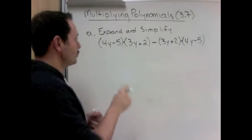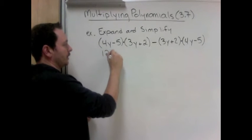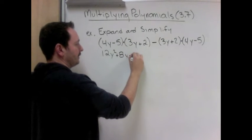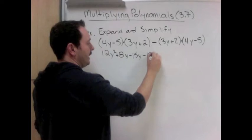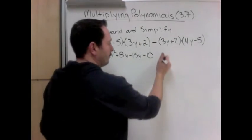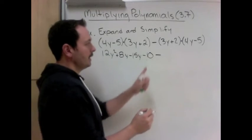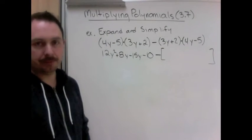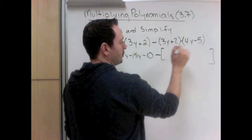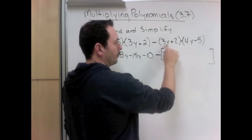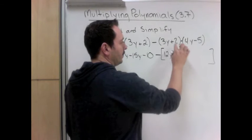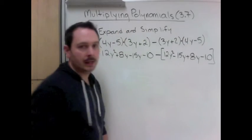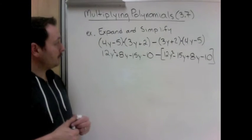And I'm going to rush through some of this because you've seen it a bunch. 4y times 3y is 12y². 4y times 2 is 8y, minus 5y, minus 5 times 3 is minus 15y, minus 5 times 2 is minus 10. And then we also have a multiply over here. So we have minus. And here's where you may make a mistake. We're going to minus all of this. So I'm going to keep a big bracket around it. Now let's FOIL this. 3y times 4y is 12y². 3y times minus 5 is minus 15y. 2 times 4y is 8y. 2 times negative 5 is negative 10.